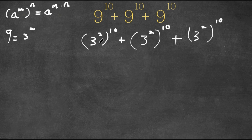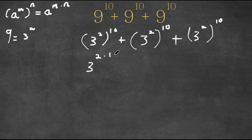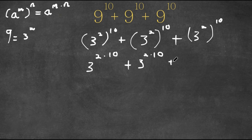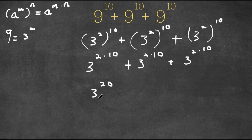And now, as you can see, all three of our terms are in the form a to the power of m to the power of n. And remember, that is equal to a to the power of m times n. So this would equal 3 to the power of 2 times 10, and the same goes for the other two. Now, 2 times 10 is 20. So we have 3 to the power of 20 plus 3 to the power of 20 plus 3 to the power of 20.